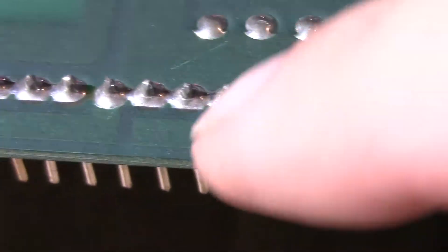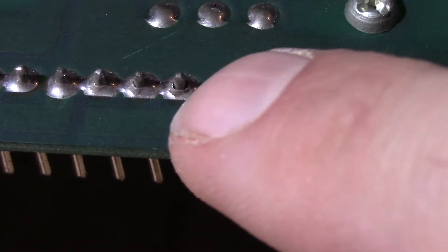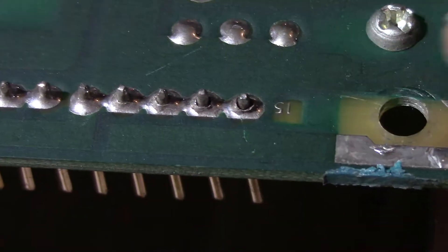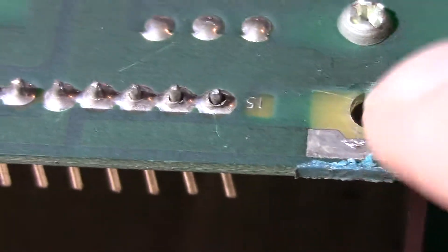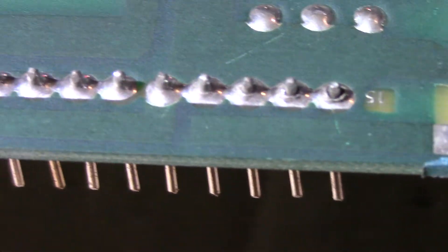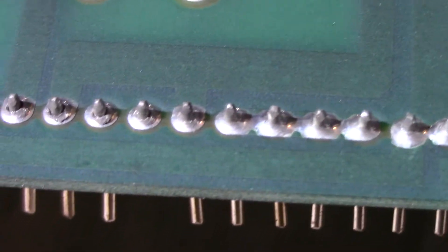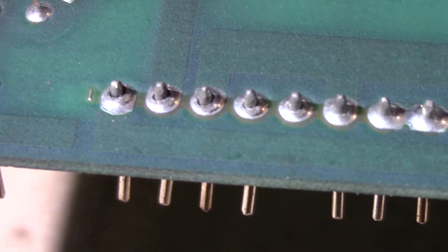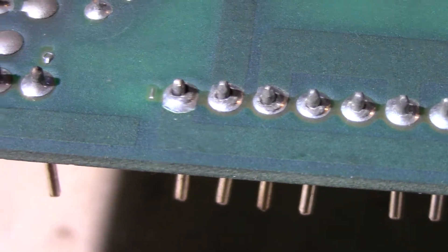You see the second pin in here, its solder joint is cracked, and the first pin is cracked. If you actually go down the line here, you'll see that there are many more cracked pins in this connector.